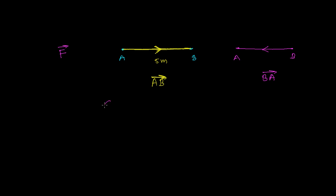If I am writing vector A and giving an arrow over it, then I understand this is vector A. If I am simply writing A without an arrow, then it just represents a scalar quantity — just A, maybe anything. But if I give a direction with an arrow, then it represents a vector.